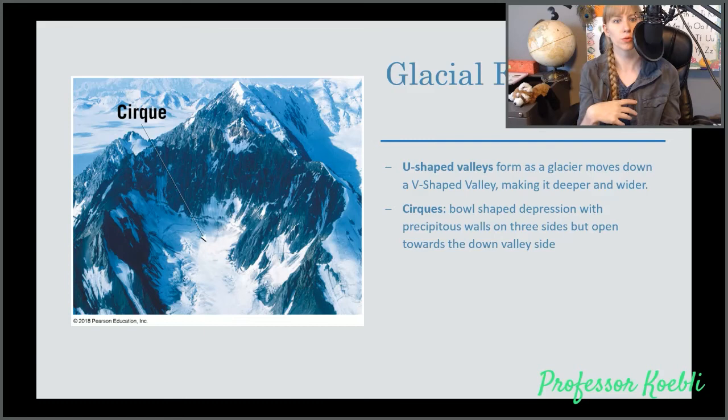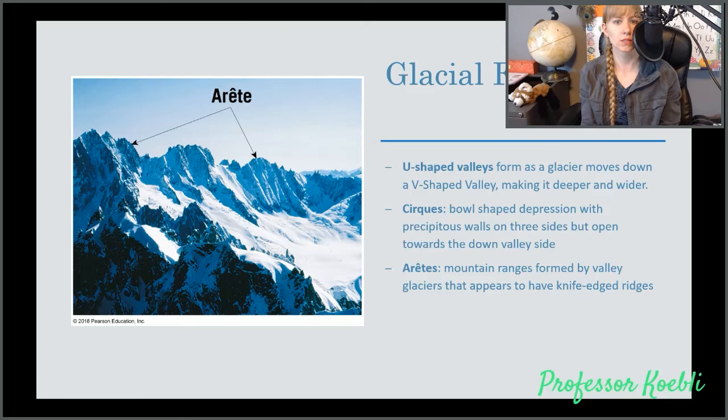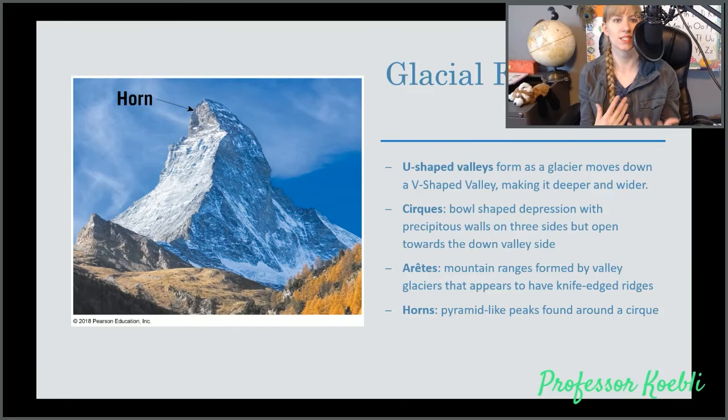Cirques are bowl-shaped depressions with precipitous falls on three sides but open towards the valley side. These are generally at the head of a glacial valley and is a characteristic feature of alpine glaciers. Then we get arêtes, which are mountain ranges formed by valley glaciers. They appear to have knife-edged ridges. We see this in the Andes in particular. Then you get these peaks. These are horns. They are pyramid-like peaks found around a cirque. Generally, they are a characteristic feature of alpine glaciers as well.